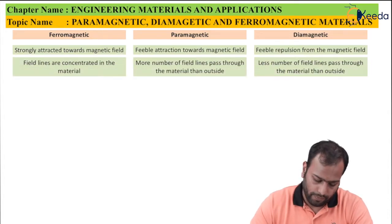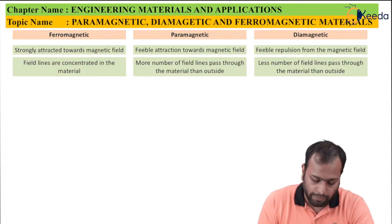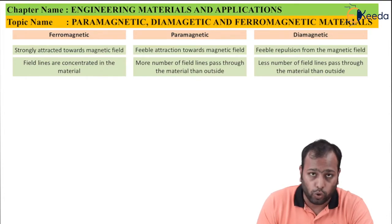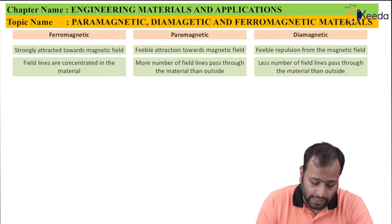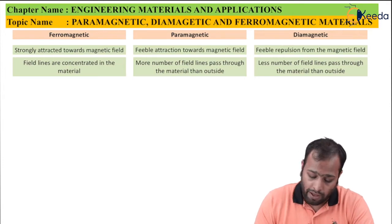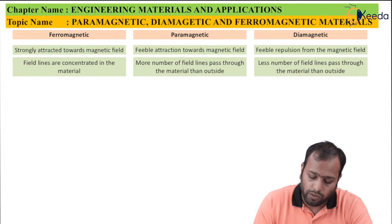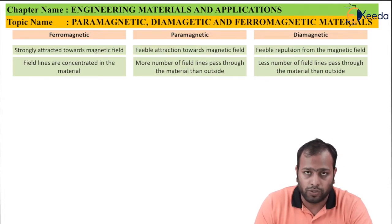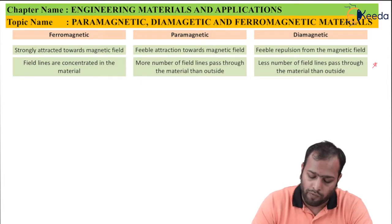Second point: field lines are concentrated in the material for ferromagnetic. For paramagnetic, more field lines pass through the material than outside. For diamagnetic, less field lines pass through the material than outside. This distinction between paramagnetic and diamagnetic is a crucial point for your university exams as well.